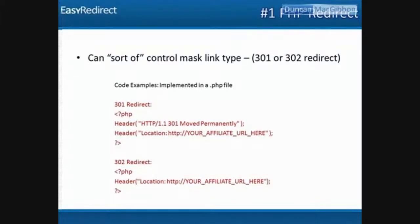The first way is called a PHP redirect. You control it on your own server — you just upload a PHP file to any server you control, name it whatever you want, and that's your redirect. You put in the code shown in red — you create a new PHP file, paste in that code, and change the 'location' value to your actual affiliate URL. Name the PHP file whatever you want, upload it, and that file redirects to your affiliate destination.